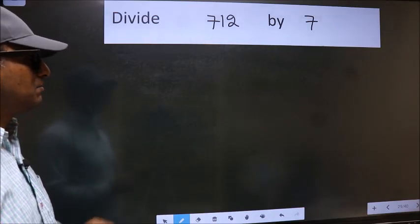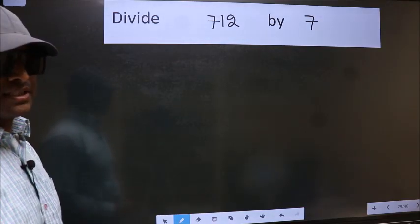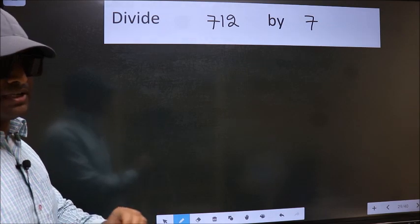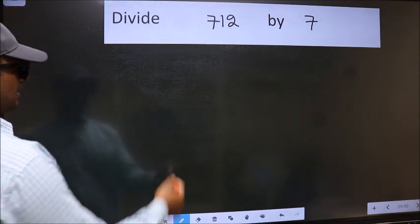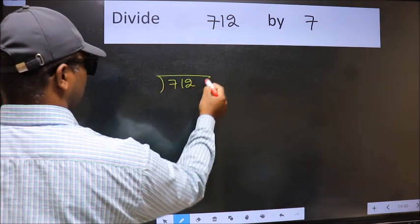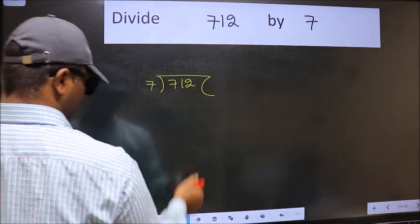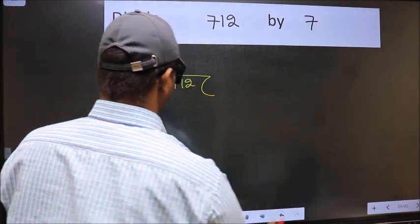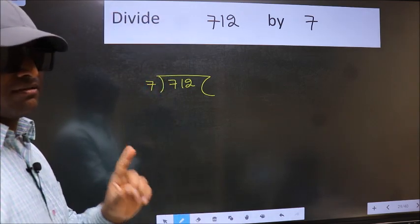Divide 712 by 7. To do this division, we should frame it in this way. 712 here and 7 here. This is your step 1.